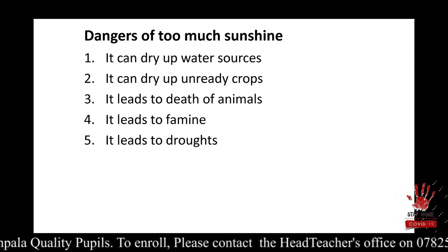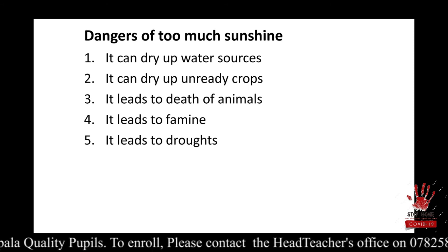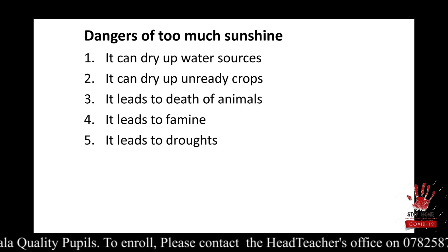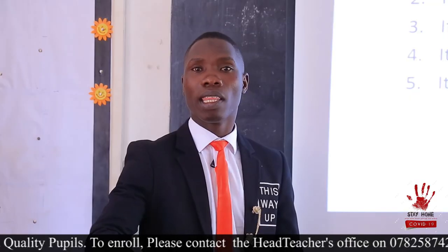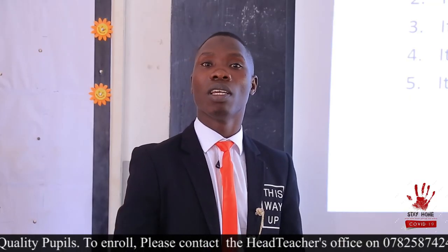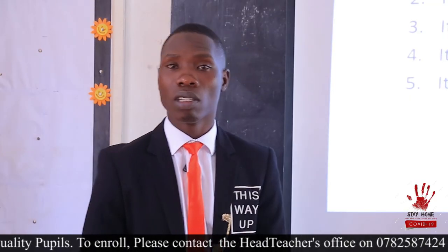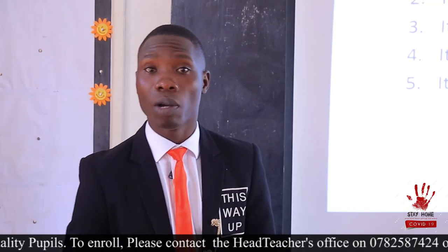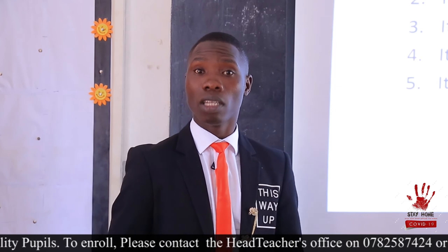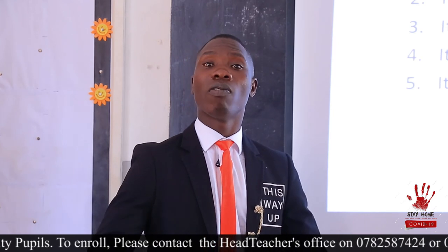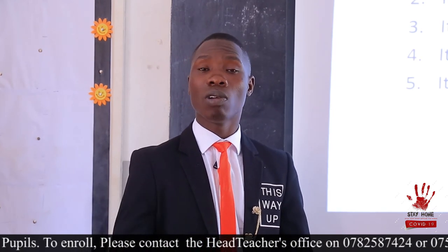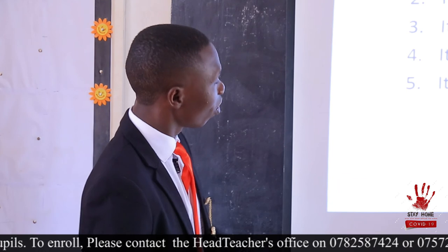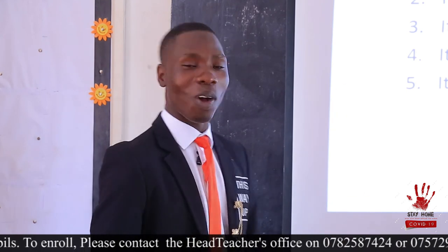Too much sunshine also leads to drought. When it shines for a long time that period becomes a drought. When it overshines it turns to drought.